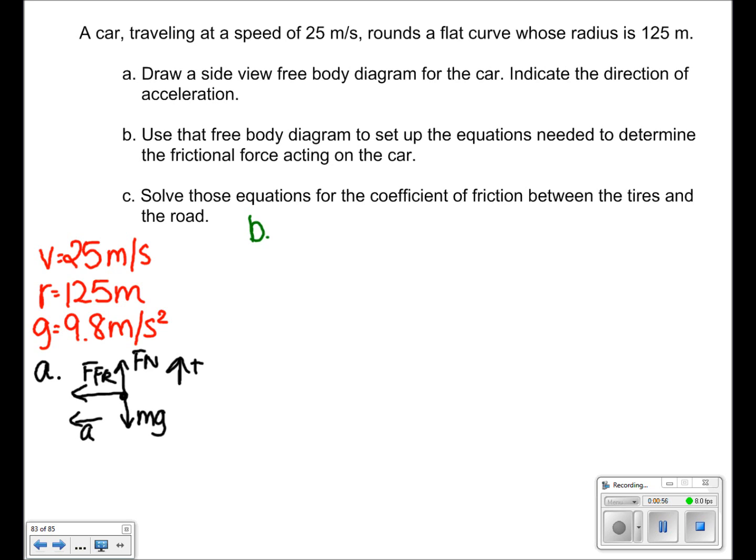In part b, we want to use the system of equations to find the frictional force. We begin with the y-axis. In the y-axis, we have sigma f equals zero because there's no acceleration. So, we have Fn minus mg equals zero. From here, we know that Fn equals mg.